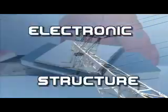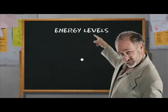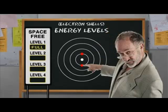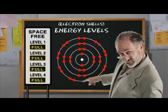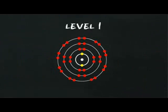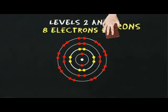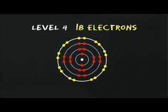Electrons can only exist at clearly defined energy levels. Thankfully, you only need to know about the first four levels for GCSE. An atom's energy levels, also known as electron shells, are filled starting with the innermost one closest to the nucleus. A level needs to be totally filled before moving on to a higher level further out. The first shell, with the lowest energy level, can contain a maximum of two electrons. Levels two and three a maximum of eight electrons each. And level four a maximum of eighteen electrons.